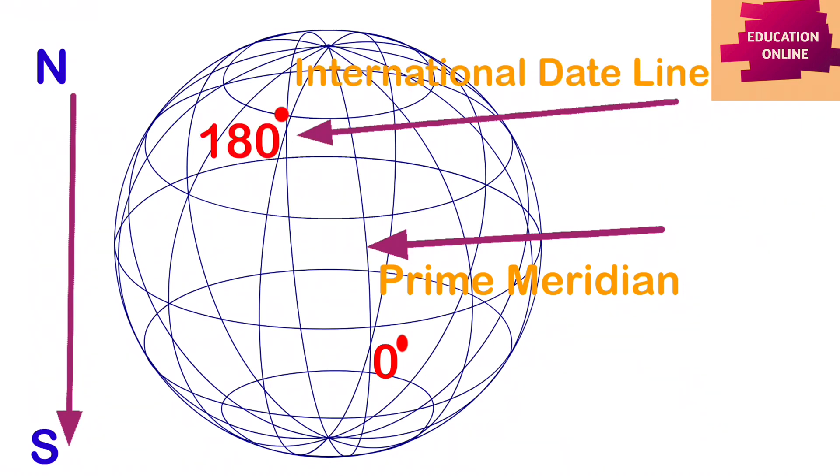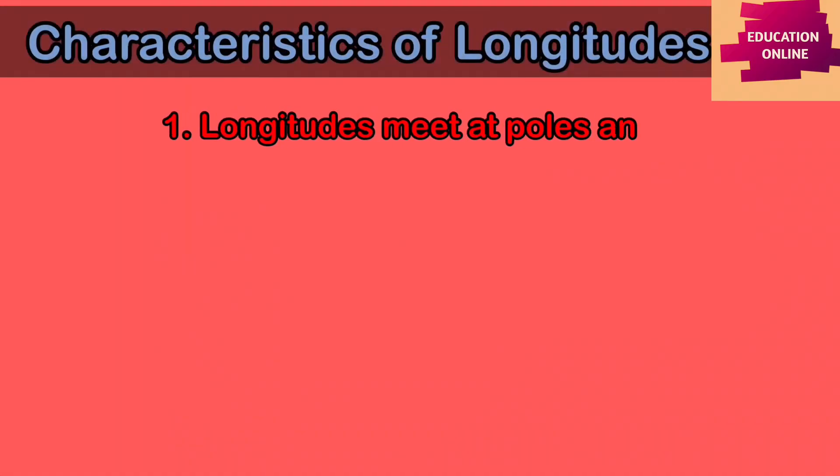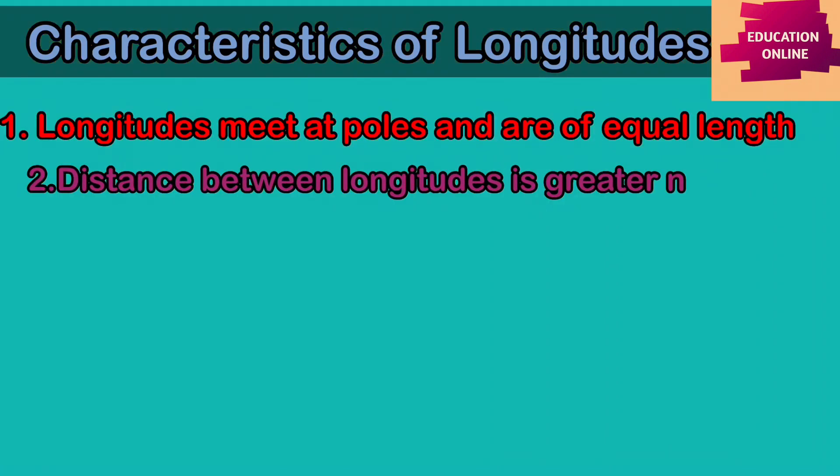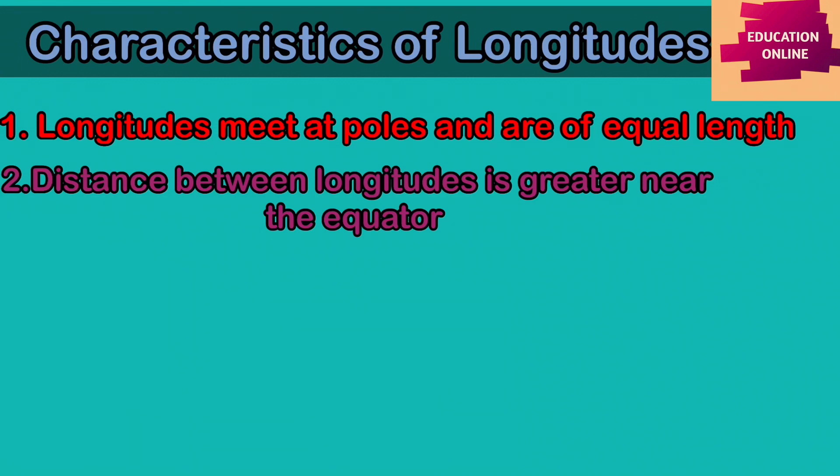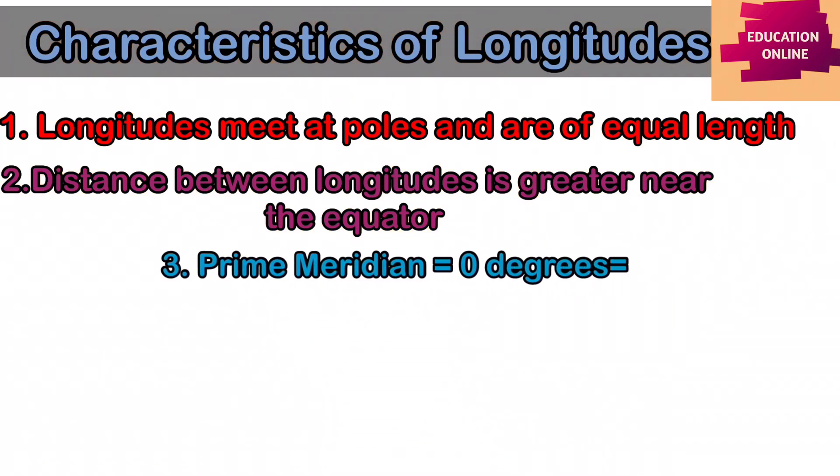Let us learn about some of the characteristics of the meridians of longitudes. Number one: all longitudes meet at the poles and are of equal length. The distance between lines of longitude varies as they are farthest away from each other at the equator and they meet at the poles. The Prime Meridian is the zero degree longitude that passes through the Royal Observatory at Greenwich near London.